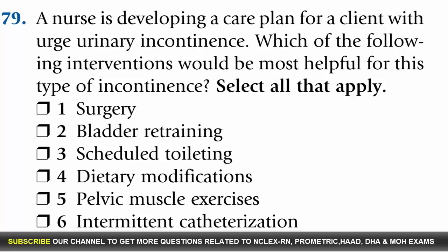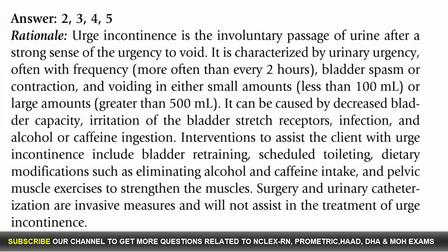Which of the following interventions would be most helpful for this type of incontinence? Select all that apply: 1. Surgery, 2. Bladder retraining, 3. Scheduled toileting, 4. Dietary modifications, 5. Pelvic muscle exercises, 6. Intermittent catheterization. Answer: 2, 3, 4, 5. Rationale: Urge incontinence is the involuntary passage of urine after a strong sense of urgency to void.